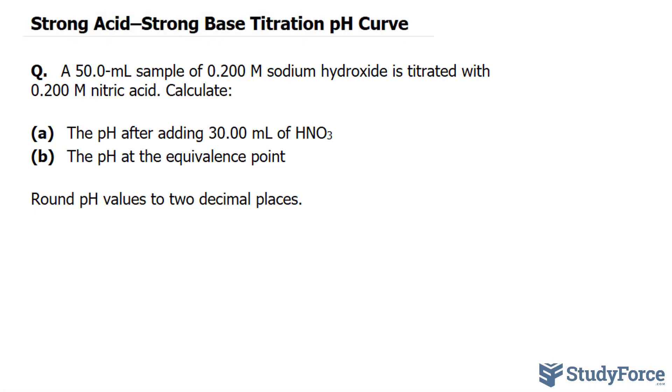The first thing that I want to do is calculate the amount of moles of sodium hydroxide. We have been given the information 0.200 molar. That's the same thing as 0.200 moles per liter. That's a concentration value.